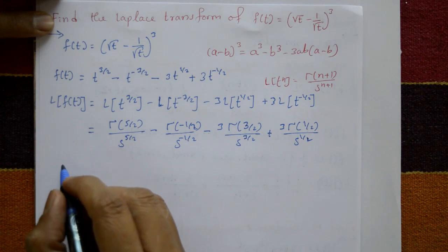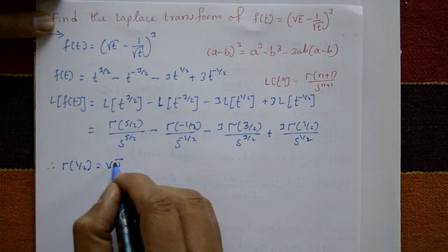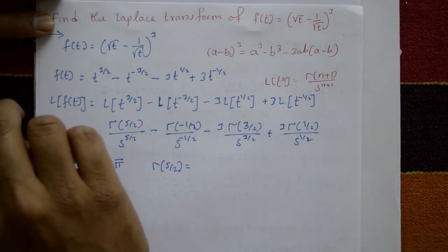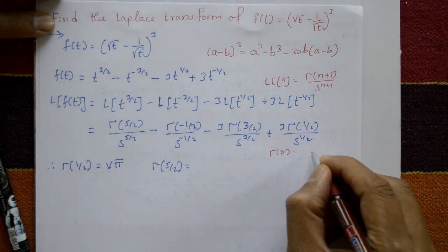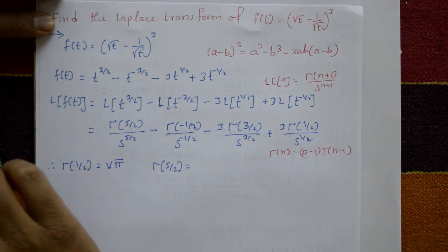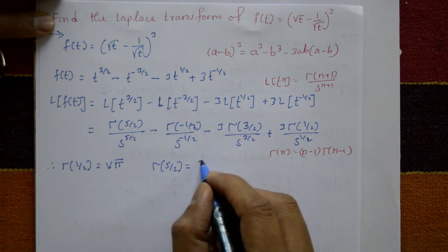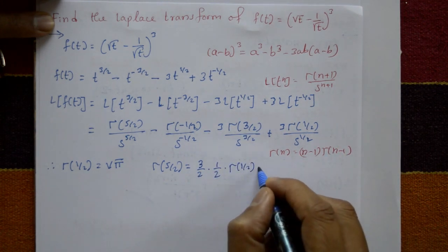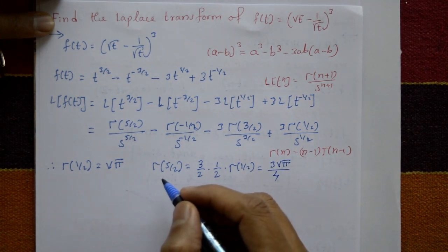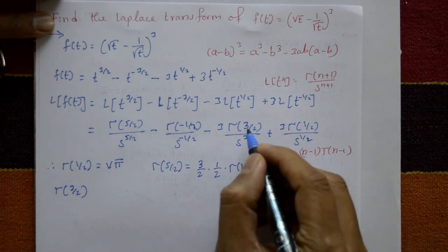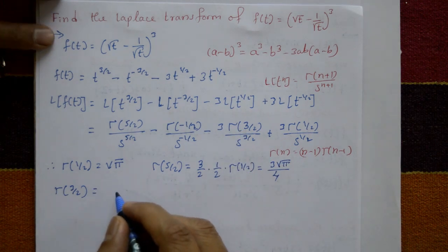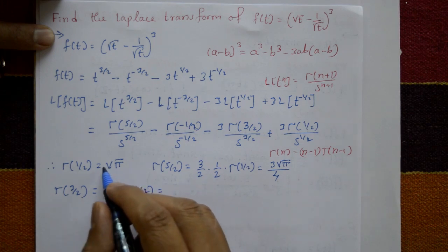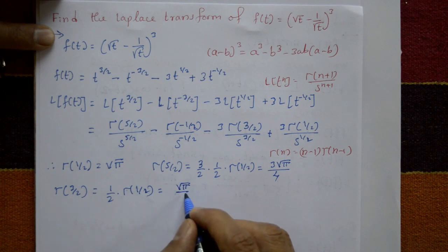We know Γ(1/2) = √π. Now, Γ(5/2) = (3/2)·Γ(3/2) = (3/2)·(1/2)·Γ(1/2) = 3√π/4. And Γ(3/2) = (1/2)·Γ(1/2) = √π/2.